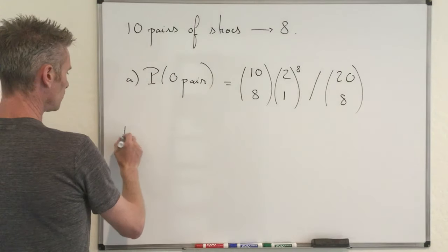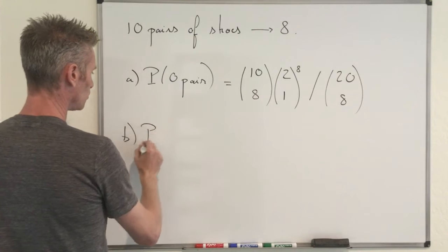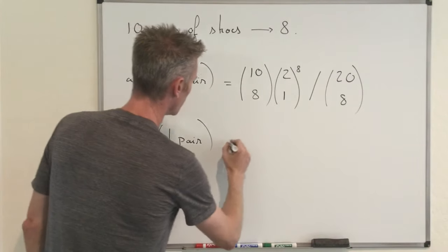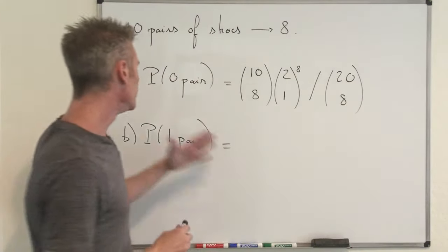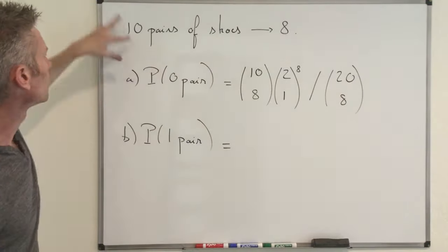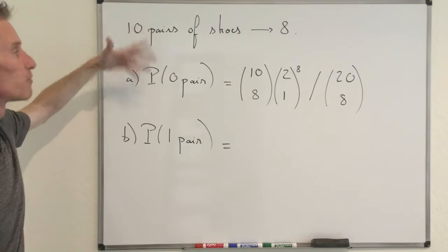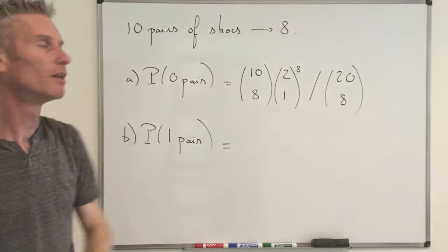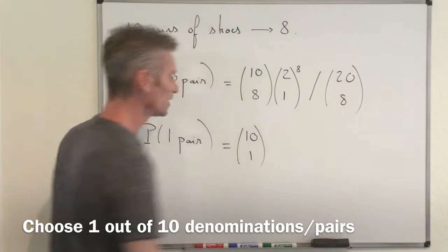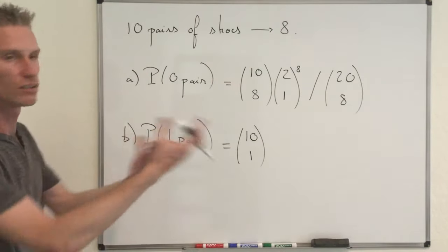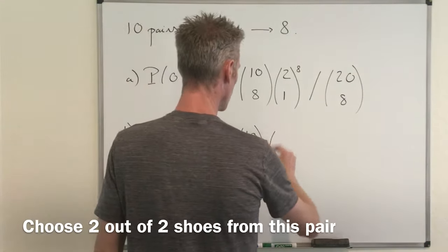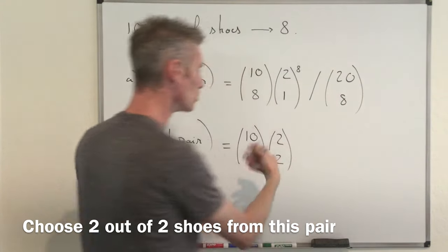Next question: we need to compute the probability of exactly one complete pair. In the spirit of poker probabilities, the first step is to choose one of the 10 pairs from which we are going to take both shoes. The number of possibilities here is 10 choose 1 — you have 10 possibilities for the pair. Then you want to take both shoes from this pair, so that's 2 choose 2, which equals 1. At this stage you have exactly two shoes and still need to take six more, since 8 minus 2 equals 6.